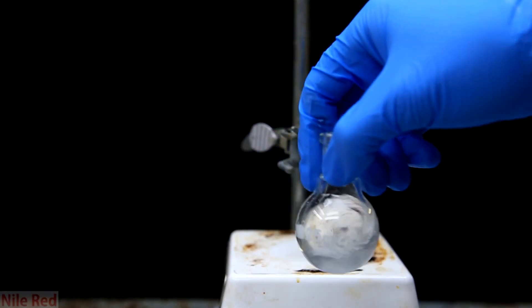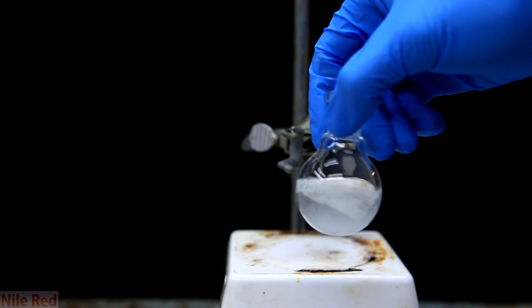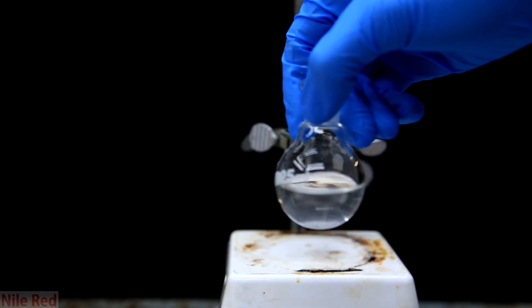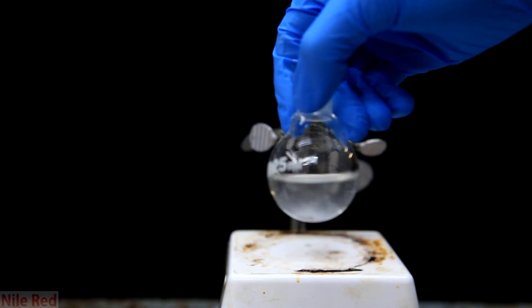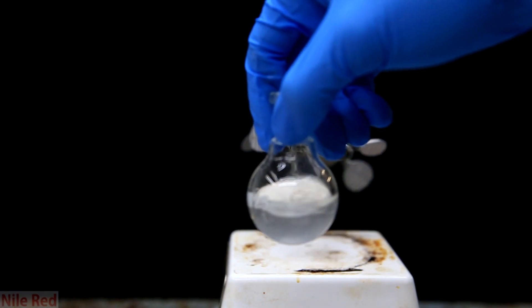You can tell that it's dry when you swirl it around and it appears that there's free floating magnesium sulfate that hasn't clumped together. Generally the water will make it clump together and when it's free floating it indicates that it's dry.